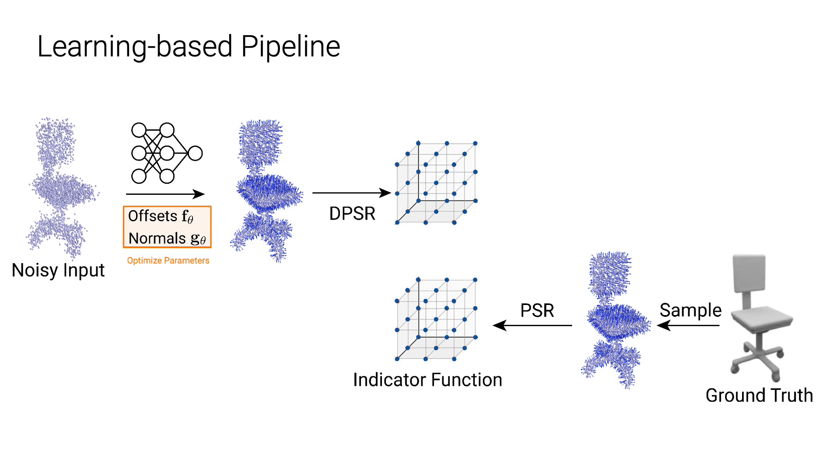To learn the network parameters in a supervised manner, we assume having watertight and noise-free meshes for supervision. We can simply sample surface points and normals from the ground truth mesh and run our Poisson solver to obtain an indicator grid, which will be served as the supervision signal. Finally, we calculate an L2 loss over the ground truth and predicted indicator functions and take advantage of our differentiable Poisson solver to learn the network parameters.